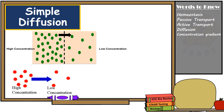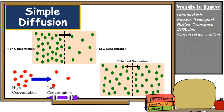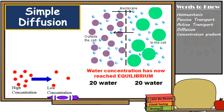Particles will continue to diffuse into and out of the cell until their concentration is the same on both sides of the cell membrane. When particles reach the state of equal concentration, the system is at equilibrium. Once equilibrium is reached, particles continue to diffuse across the membrane in both directions without changing concentration. Not all particles can diffuse across the cell membrane — this is why it's referred to as a selectively permeable membrane, which only allows some particles to pass through.